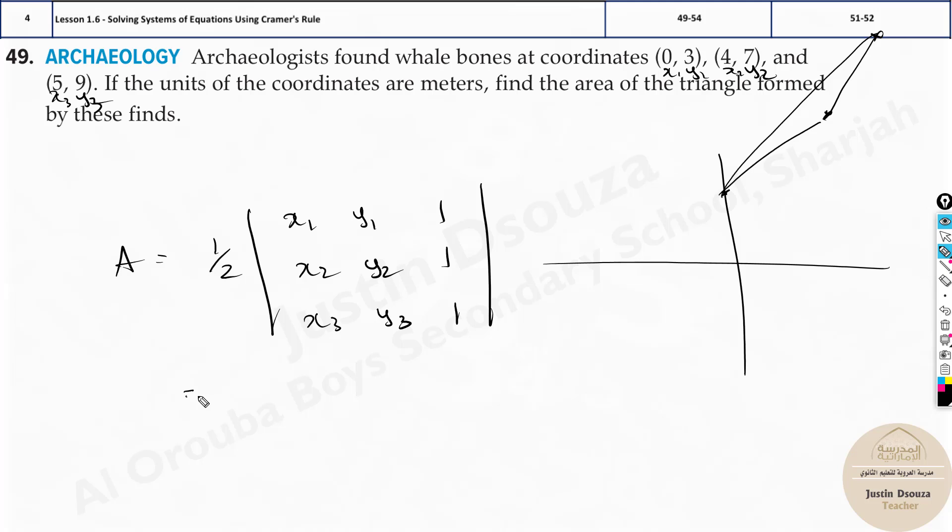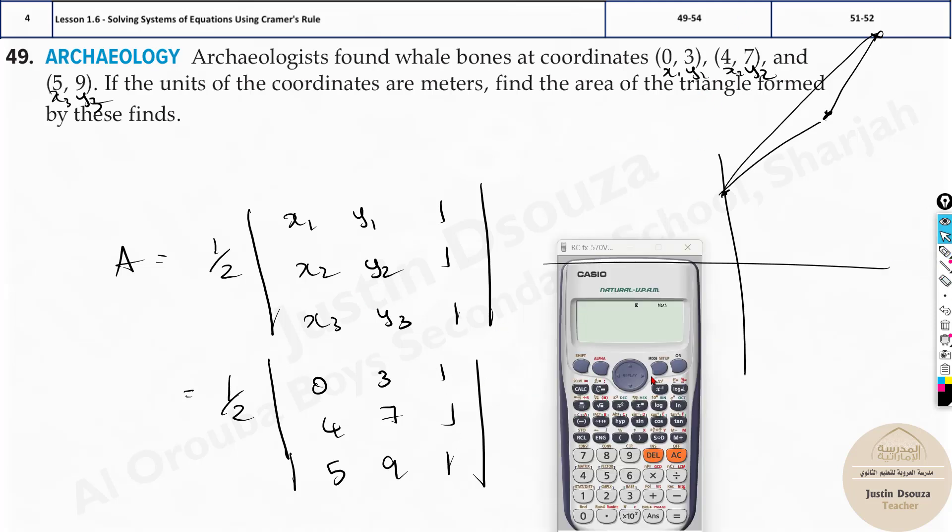Now what you need to do is half times determinant of what? It is 0, 3, 1, 4, 7, 1, and lastly we have 5, 9, 1. So this is it. Now we can directly put it in the calculator and solve. No need of finding any determinants manually. Let's use the matrix mode, that is mode 6. And let's fill in this as matrix 1. This is 3 by 3, so let's type it out.